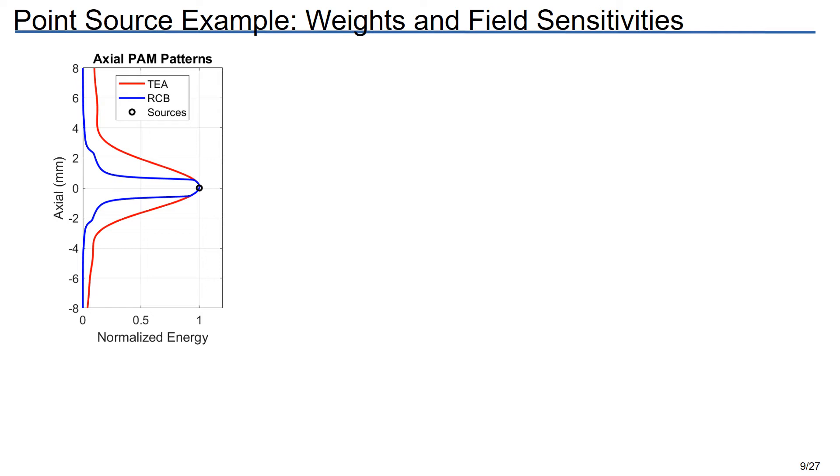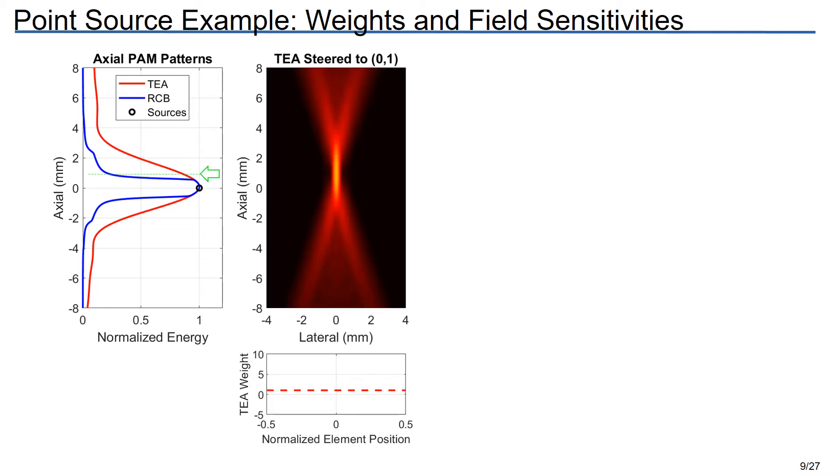We can get a better feel for this by looking at the axial PAM patterns. Near the origin where the source is, we see that TEA and RCB are doing about the same thing, but near about plus or minus one millimeter, RCB diverges quite strongly with a much better response. And if we want to understand how these things happen with an adaptive beamformer, it helps to look both at the weight functions and the resulting field sensitivities. So starting with our non-adaptive beamformer, TEA, steered to a location one millimeter past the origin. Well, first of all, the weights are all uniform, so there's nothing to calculate there. But if we look at the characteristic sensitivity pattern that results from steering to this location with those weights, we see that the beam pattern is fairly broad and it's broad enough to capture and incorporate any source that exists at a location at the origin. And that is, in fact, what's happening here.